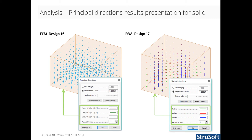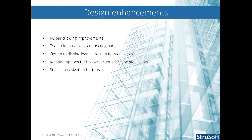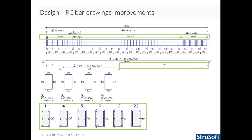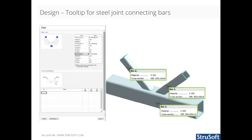Arrows at the ends of the lines indicate whether the principal stresses are tension or compression. Now we take a look at the design enhancements. In the reinforced concrete bar detailed results, you can find new elements on the reinforcement drawing: stirrup dimension lines, long bar dimension lines, and cross sections with reinforcement bar numbers. In FemDesign 17, a tooltip for joint bars has been implemented for easier identification of connecting beams and columns.